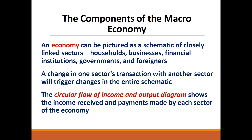Economy can be pictured as a schematic of closely linked sectors like household, business, financial institutions, governments, and foreigners. A change in one sector's transaction with another sector will trigger change in the entire system. The circular flow of income and output diagram shows the flow of income from one sector to another — it shows the income received and payments made by each sector of the economy.